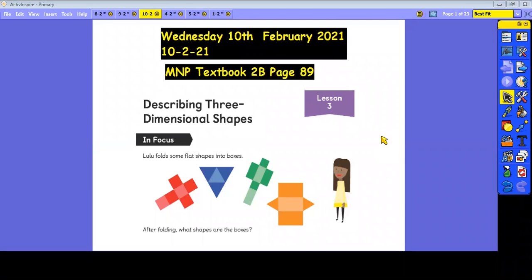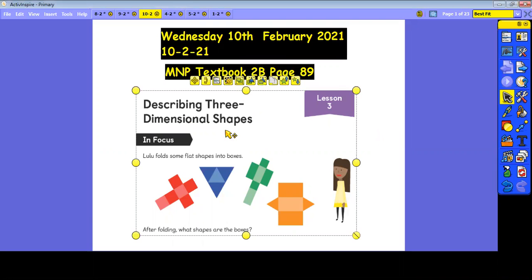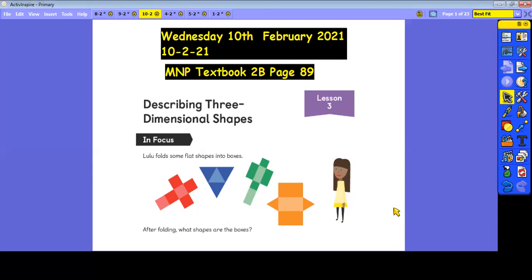Good morning, Year 2. We've now reached Lesson 3 of our chapter on 3D Shape, Chapter 12. Today, on Wednesday the 10th of February 2021, we need to open our textbook to be on page 89 to work through the in-focus task together. You can see the lesson title is Describing 3-Dimensional Shapes.